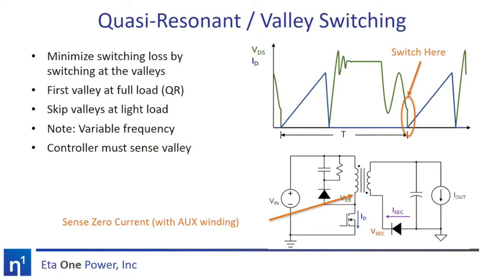Let's now examine quasi-resonant or valley switching operation. The goal is to minimize switching loss by turning on the primary side transistor at a valley in the switching voltage waveform. At full load, we typically want to switch at the first valley, which corresponds to quasi-resonant operation. Because this is a variable frequency control strategy, the switching frequency will increase at lighter loads. To prevent an excessive switching frequency, we will skip some valleys at light load to decrease the average switching frequency. The key to implementing a valley-switched flyback is to sense the voltage across the transformer and to switch at a valley. We will use an auxiliary winding for this purpose.